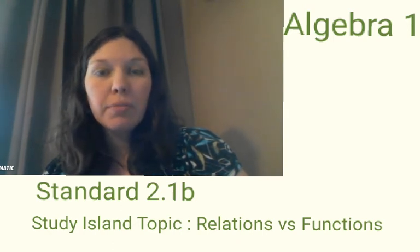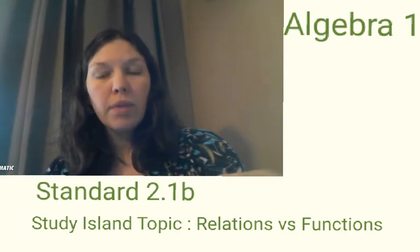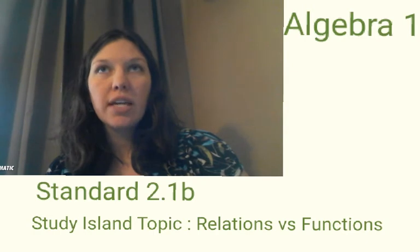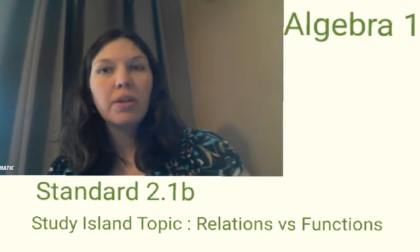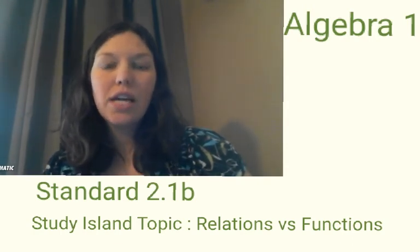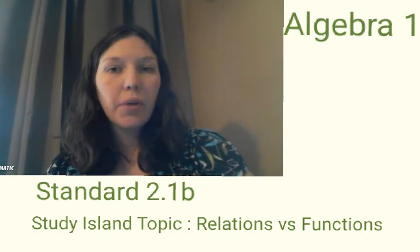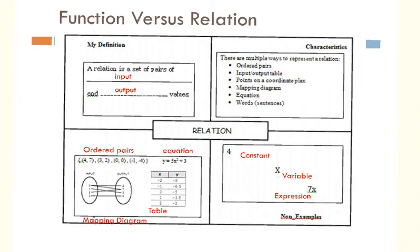As you work through these problems, keep in mind that a function is a type of relation — relation is the broader term and function is more specific. Just like red is broad but cherry red or apple red are more specific — they're all still red. So every function is still a relation; it's just a more specific type. This is called a Frayer model, one way to show a definition for a word.